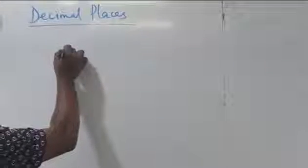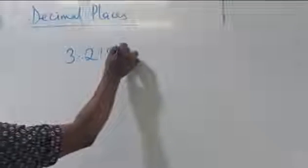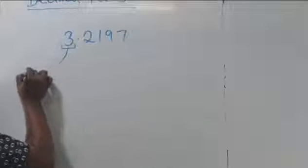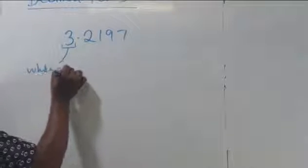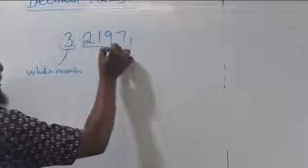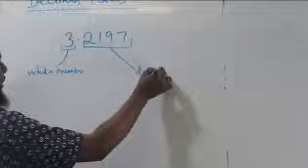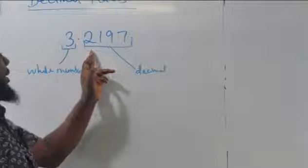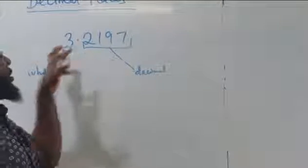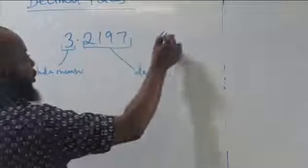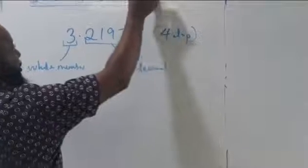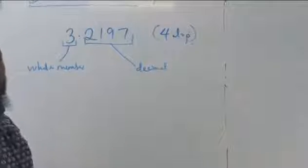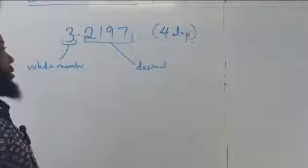When you have a number like 3.2197, the first part is the whole number part, while the other part is the decimal part. The question now is: how many decimals do we have after this decimal point? Four. So this number itself is in four decimal places, or 4dp. They can ask us to reduce this to two decimal places or one decimal place — that's what we are going to learn in this class.